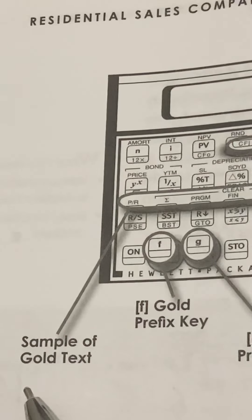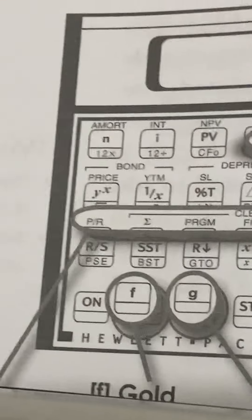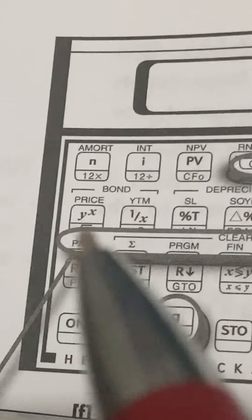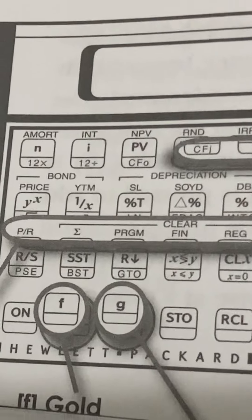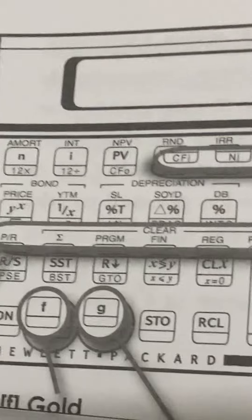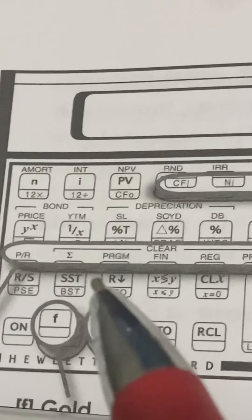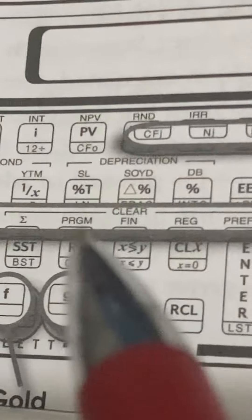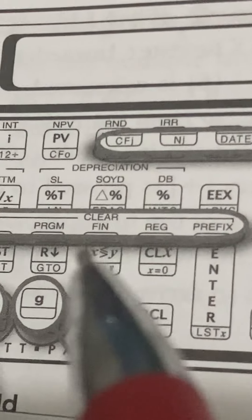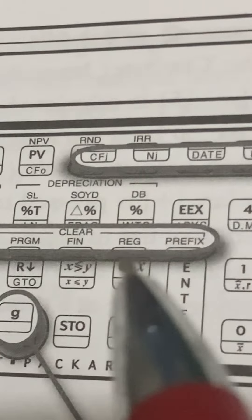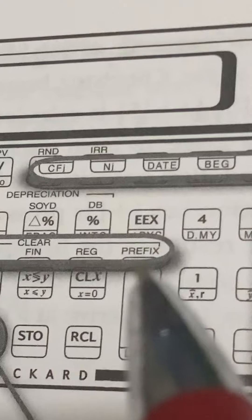Here is a sample of the gold text. Next, you can see on the top the letter P slash R. And then, I forgot what it's called. It's a symbol. It looks kind of like an E. The next one over is the letters P, R, G, M. The next one over is the letter F, letters F, I, N. And then the next one over is the letters R, E, G. And then lastly, the letters P, R, E, F, I, X for prefix.